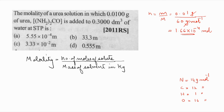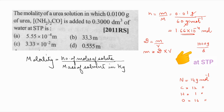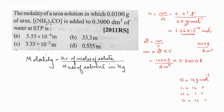Now we need the mass of the solvent, but they haven't given that directly — instead they've given the volume of water. We know that density = mass / volume, so mass = density × volume. The density of water is 1000 g/dm³ (a constant for water). Substituting: mass = 1000 g/dm³ × 0.300 dm³. The dm³ units cancel, giving a mass of 300 grams of water.